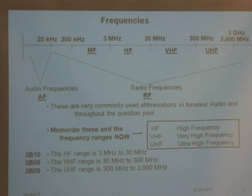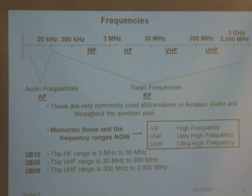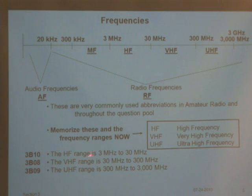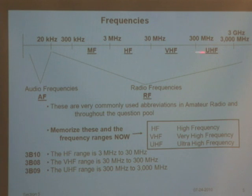This is a memorizing time. When they say UHF, you need to know it's between 300 and 3,000 megahertz, or 3 gigahertz. These are the very commonly used amateur radio ranges in the question pool. So: the HF range is 3 to 30 megahertz, the VHF range is 30 to 300 megahertz, and the UHF range is 300 to 3,000 megahertz. These are memorizing issues.